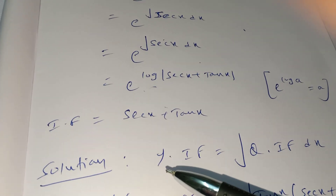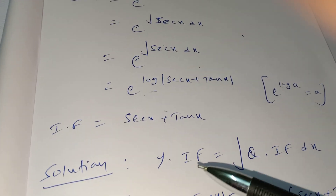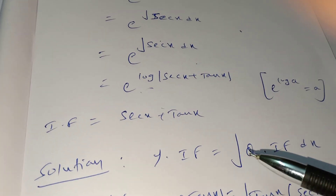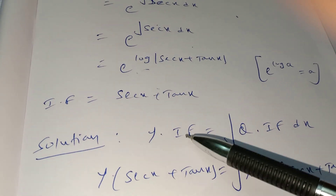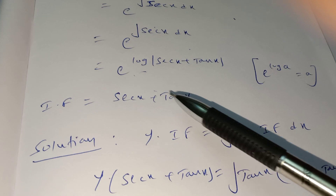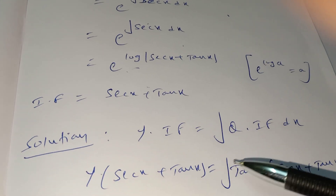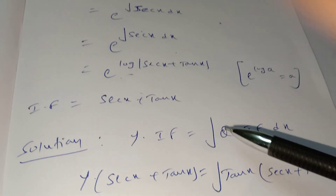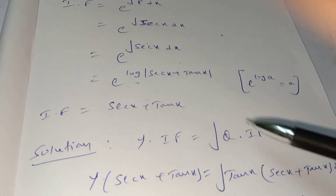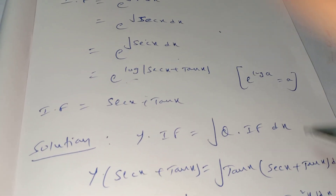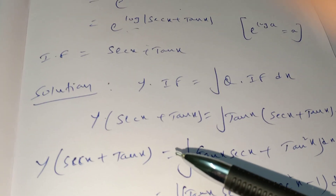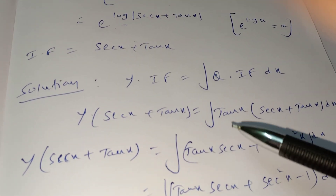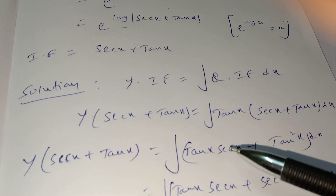The solution formula is: y × IF = ∫Q × IF dx. Substituting, we get y(sec x + tan x) = ∫tan(x) · (sec x + tan x) dx. The left-hand side stays as is; on the right we expand to get ∫[tan(x)·sec(x) + tan²(x)] dx.